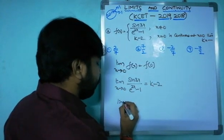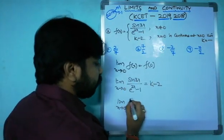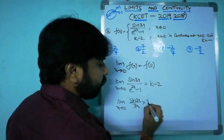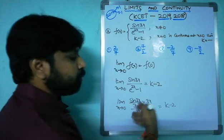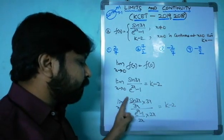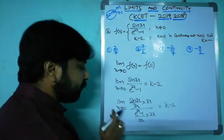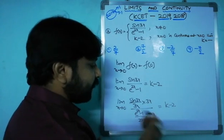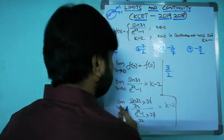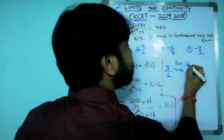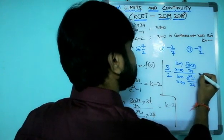For sin(3x) we multiply and divide by 3x, and for (e^(2x) - 1) we multiply and divide by 2x. We can split the limit: [limit x→0 sin(3x)/(3x)] / [limit x→0 (e^(2x)-1)/(2x)], with the constant factor 3/2 outside, all equals k - 2.